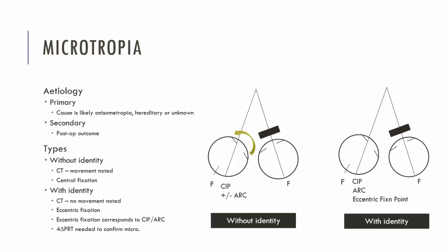When we diagnose a patient with a microtropia, we can further subclassify them as either having a microtropia with identity or a microtropia without identity. The key difference between the two is eccentric fixation — the patient with microtropia without identity has no eccentric fixation (central fixation), and the patient with identity has eccentric fixation. This means we'll have different cover test results for each of these types.